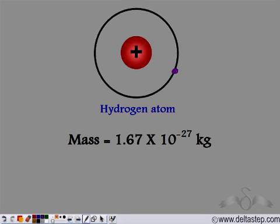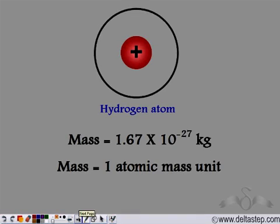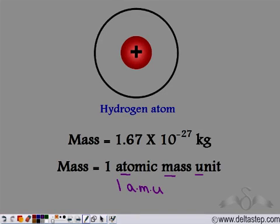This is a very complicated number, so to avoid using these numbers, scientists prefer to use simpler numbers. In chemistry, we use the atomic mass unit (amu) to measure the masses of these light particles. The mass of one proton is taken to be 1 amu. That is why the mass of a hydrogen atom, which contains one proton, is 1 amu. We neglect the mass of electrons because it is quite negligible. Hydrogen is the lightest element, containing only one proton, and its mass is 1 atomic mass unit.